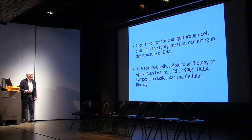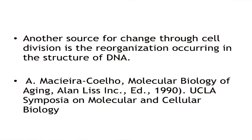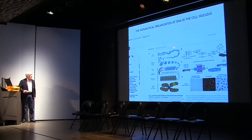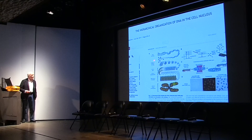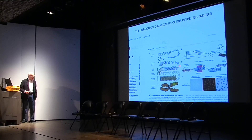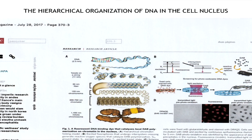Another source of change in addition to cell division is the reorganization occurring in the structure of DNA. DNA is organized in a series of hierarchical structures — from the DNA helix that folds into a 10 or 11 nanometer fiber with the nucleosomes, which folds again into a 30 nanometer fiber, then the chromonema, the chromatid, and finally the chromosome. There are changes that occur in all these hierarchical structures.